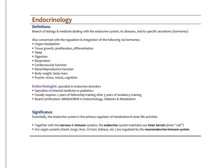What regulates tissue growth, proliferation, and differentiation is also under regulation of the endocrine system. Sleep, digestion, respiration, cardiovascular function, renal and reproductive function, body weight, body mass, and even effects on the brain, our inner emotional life, and our thinking life — the endocrine system also has an influence on the psyche.